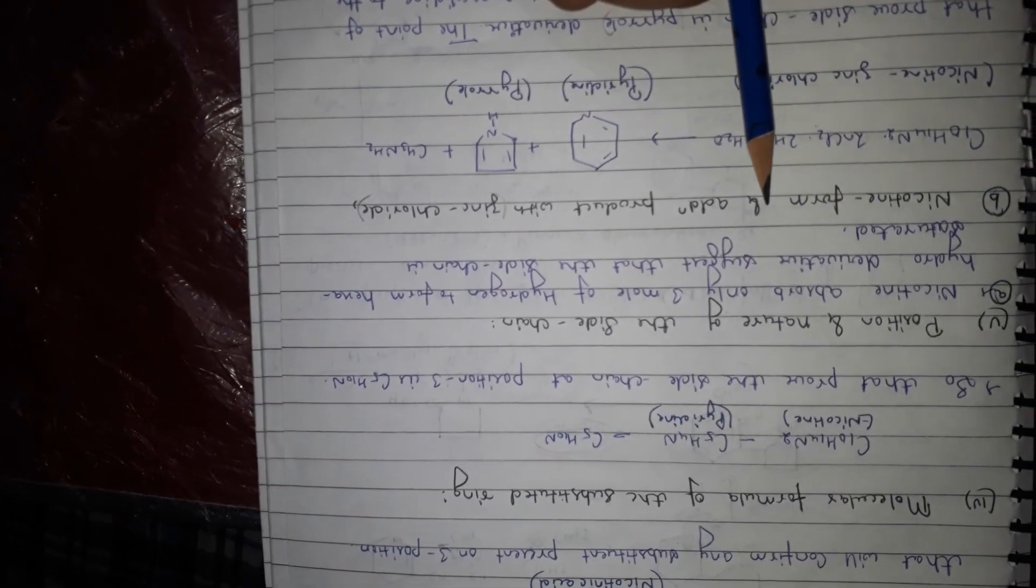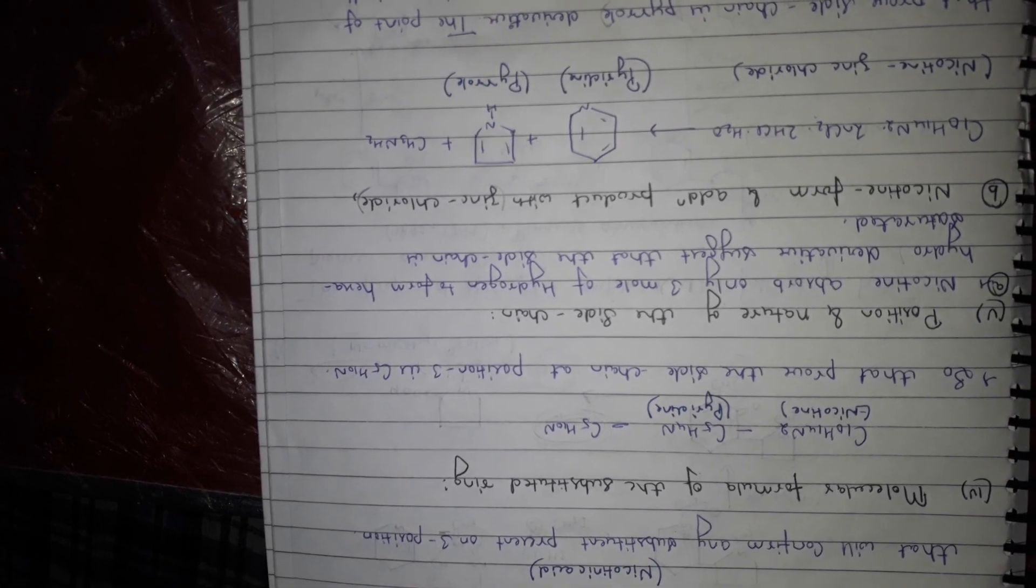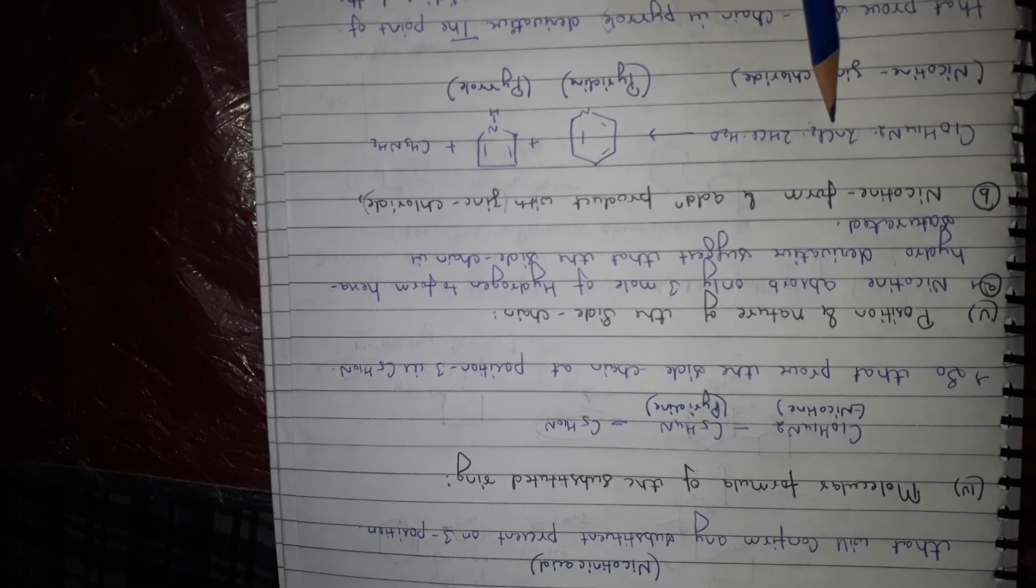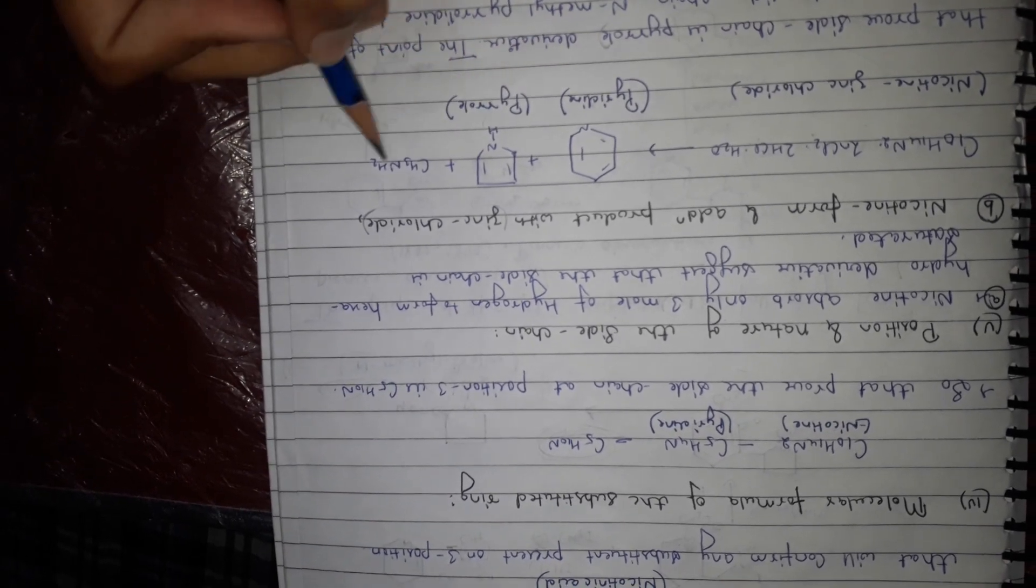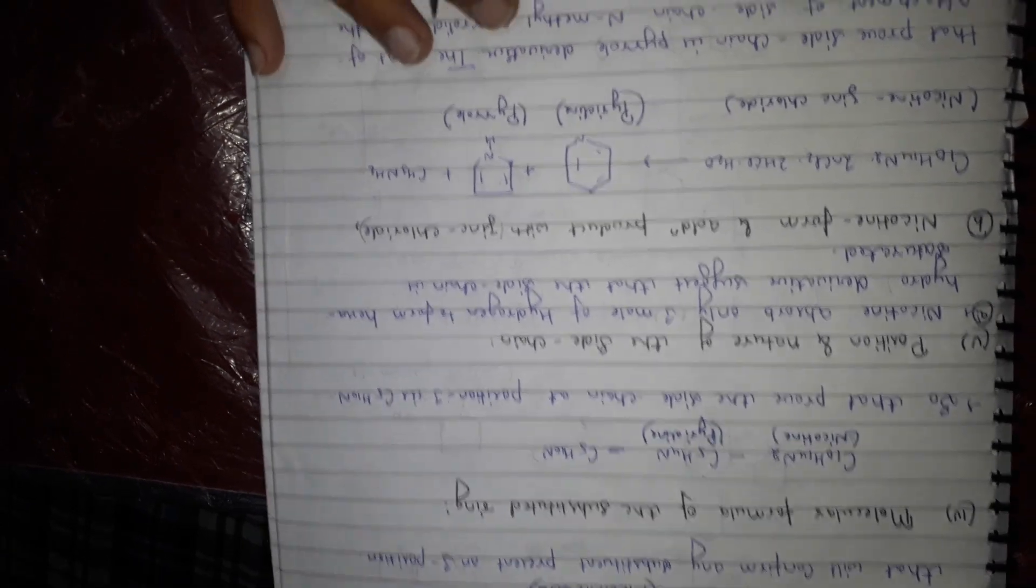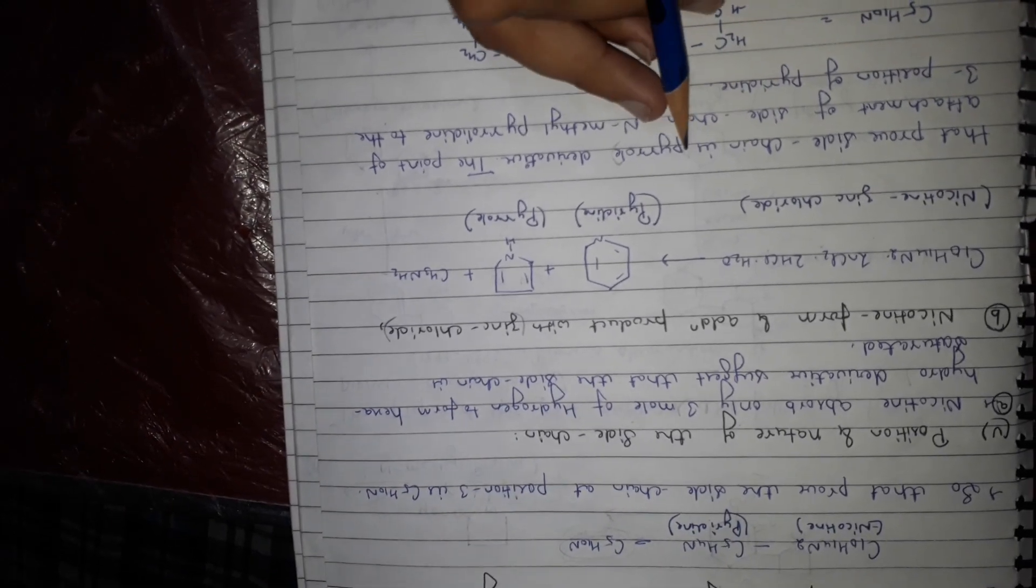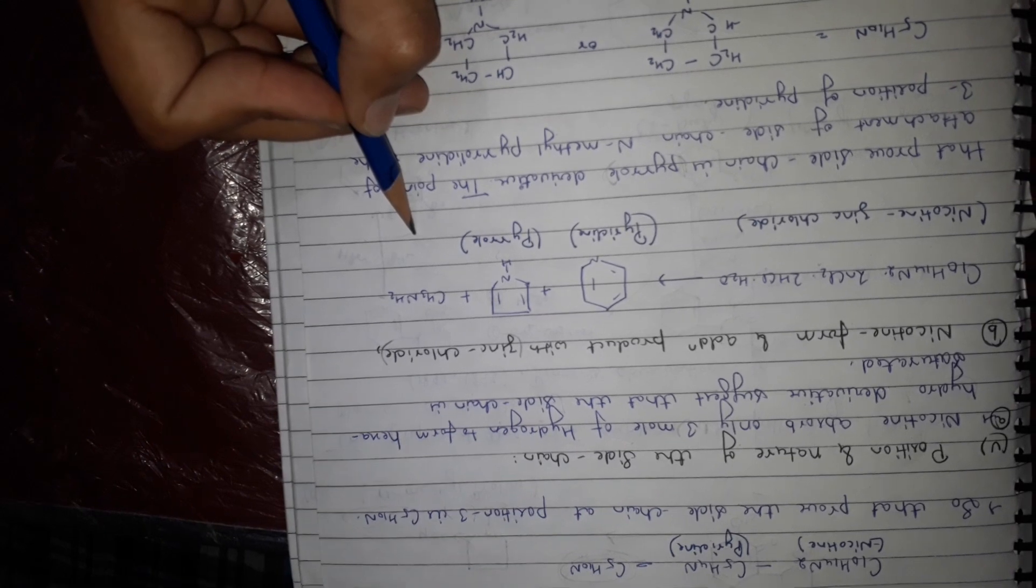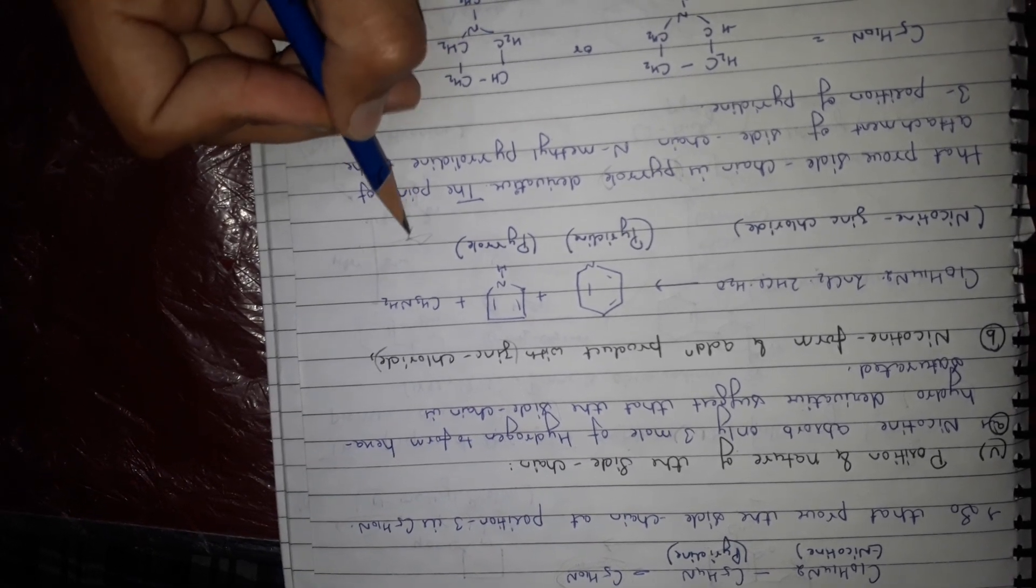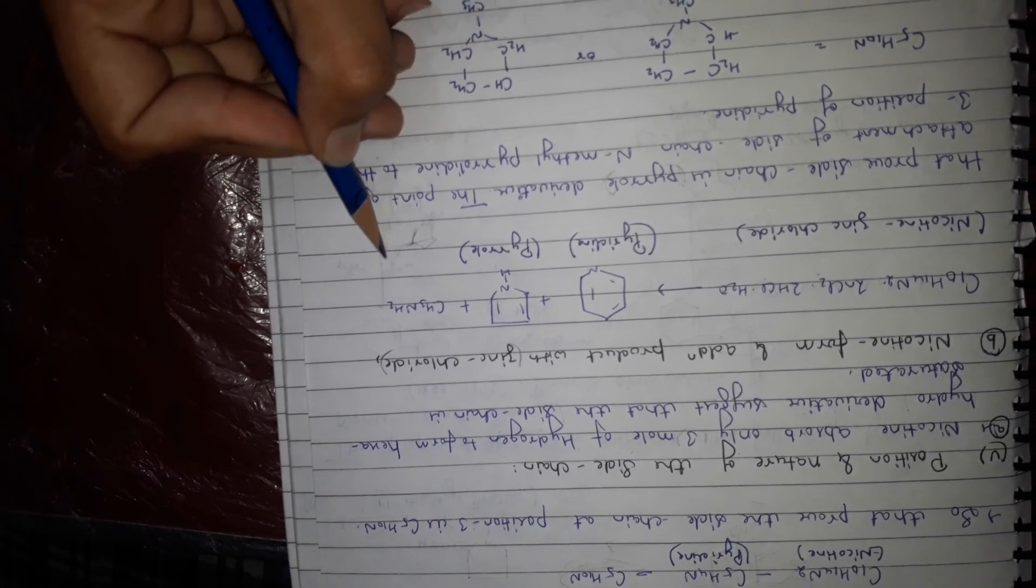Nicotine forms an addition product with zinc chloride, nicotine zinc chloride 2HCl 2H2O, to give pyridine, pyrrole, and CH3N and NH2. That proves the side chain is pyrrole at third position. Pyridine here and this one is pyrrole.